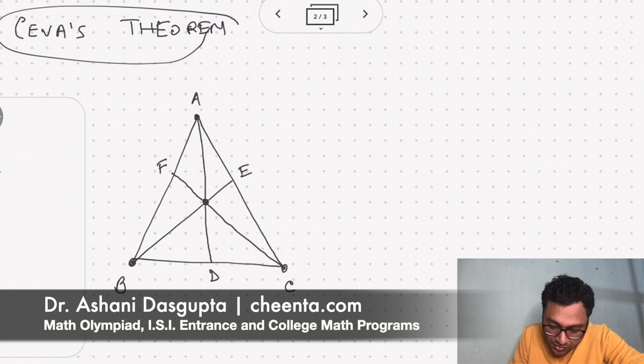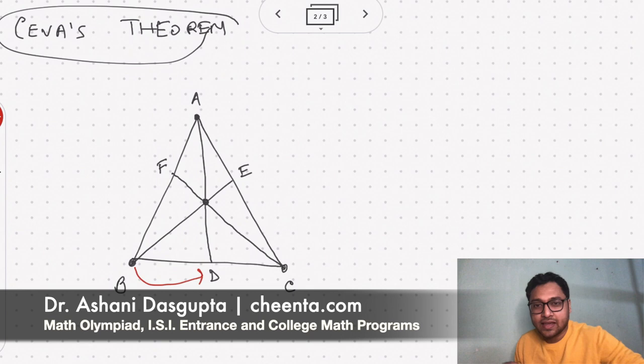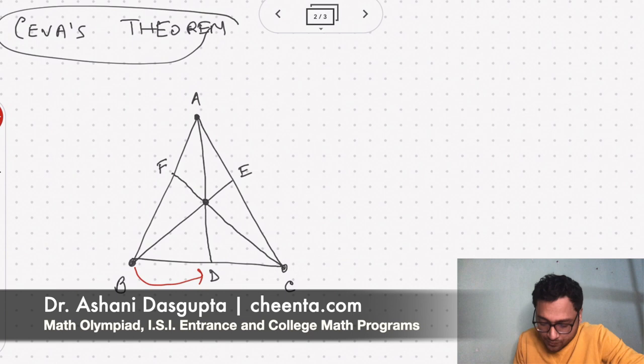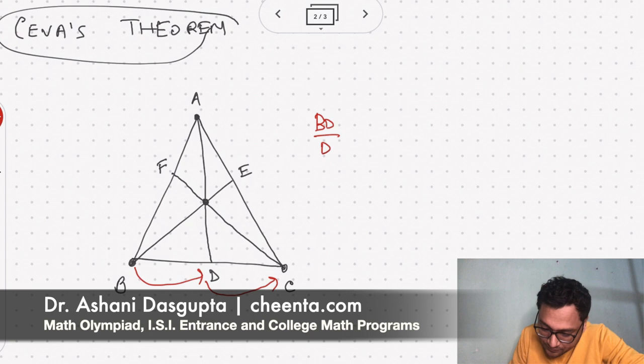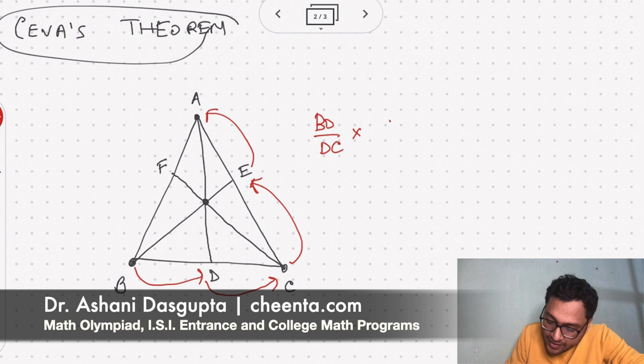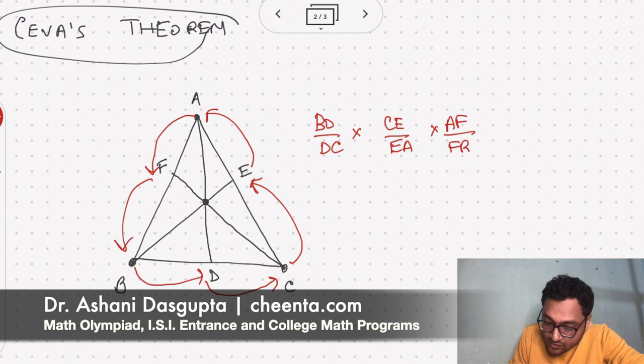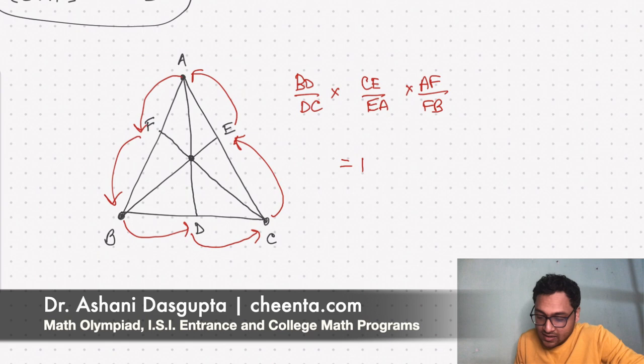then a particular ratio is true. So what ratio is that? Well, you start from B. I'll tell you how I remember this. Okay, so you start from any vertex. Let's start from B. B to D, D to C, so I write BD by DC times C to E, E to A, so I write CE by EA, and then A to F, F to B. So I write AF by FB. This is equal to one. Okay, so this is the statement of Ceva's theorem.